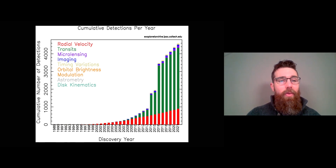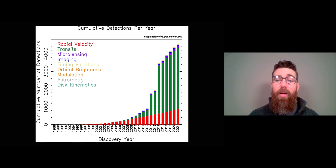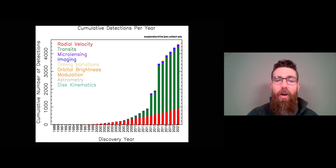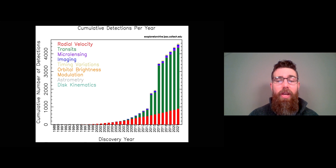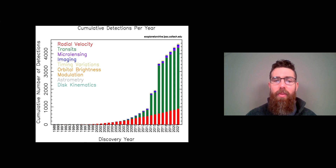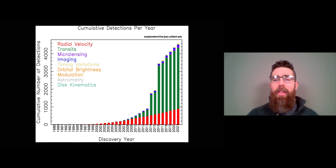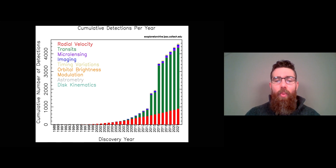All the different colours here represent the different methods that they've been detected by, and you can see the majority has been by the green method, which is the transit method and the one we're interested in for this video. The next most significant one is radial velocity, which we can cover in a different video. You can see how there's been a large increase in recent years, and we've got lots of information about those exoplanets.